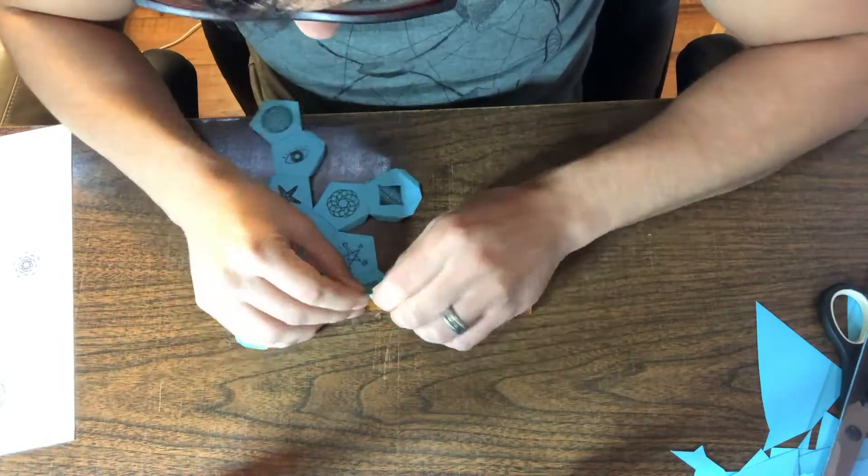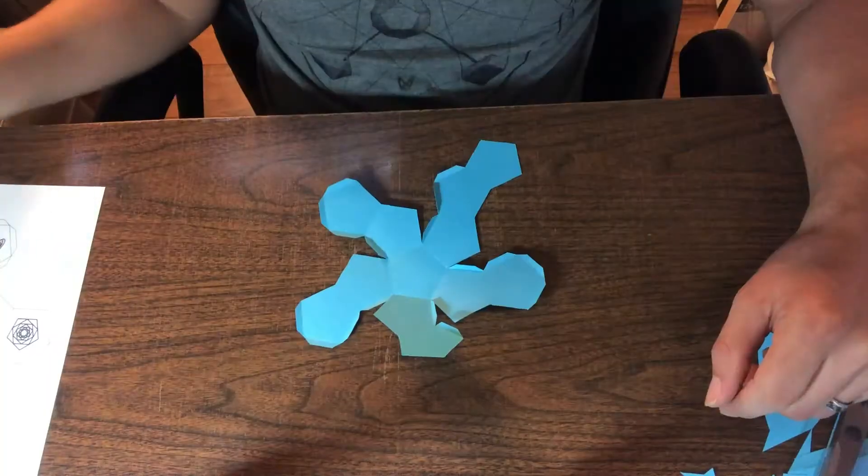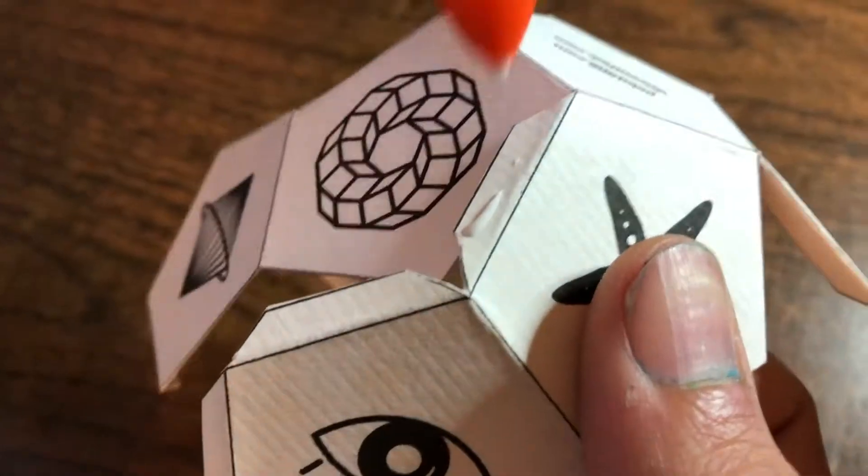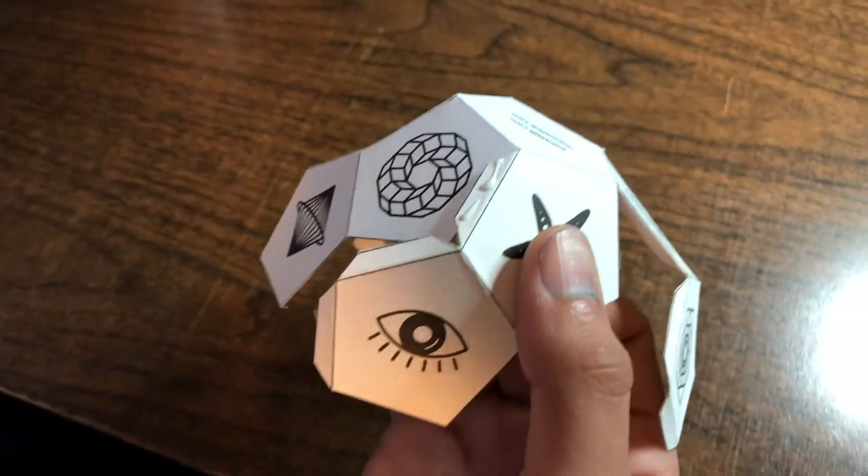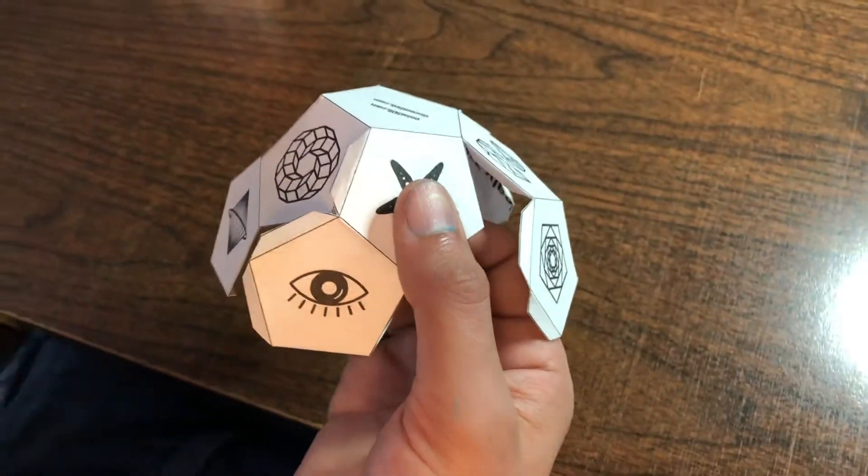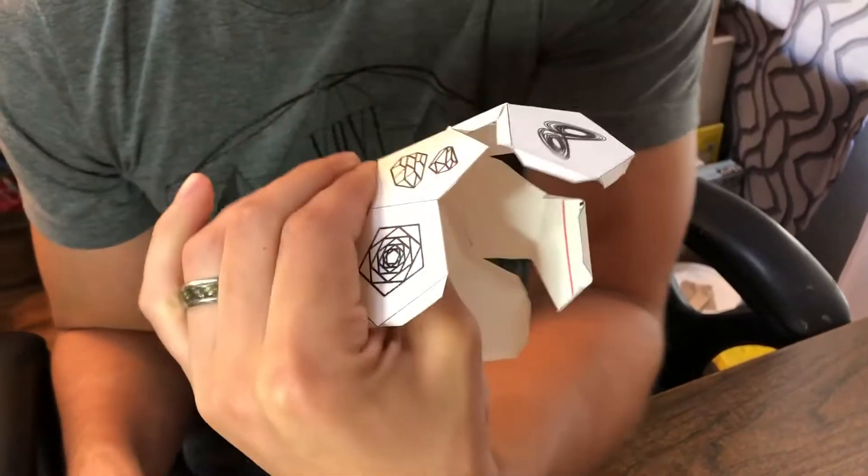Once this step is done, you can move into the final step of gluing or adhering all the edges together by the tabs. Apply a thin layer of glue all the way across the tab, then press it up against the back of the adjoining edge.